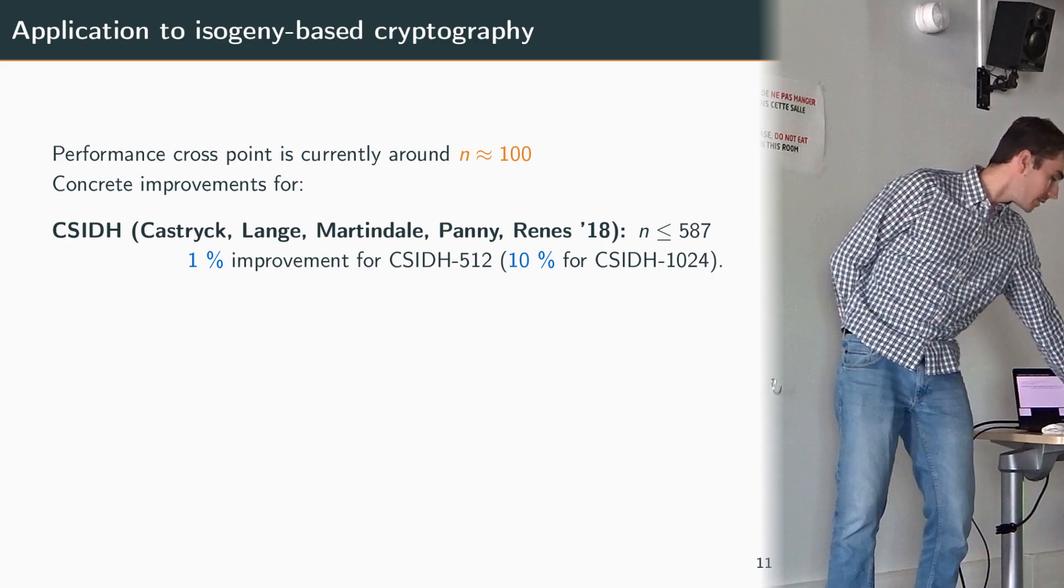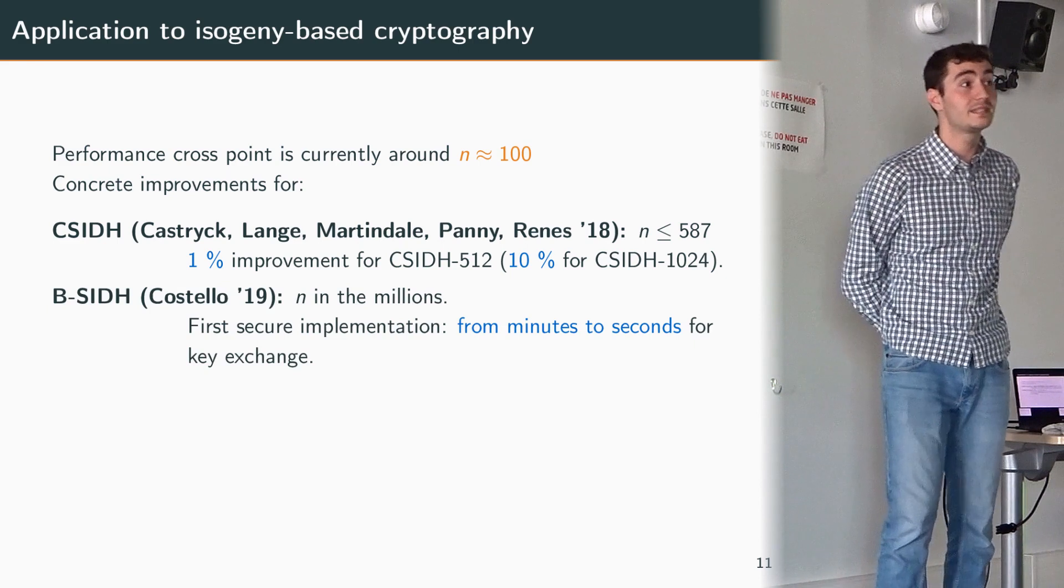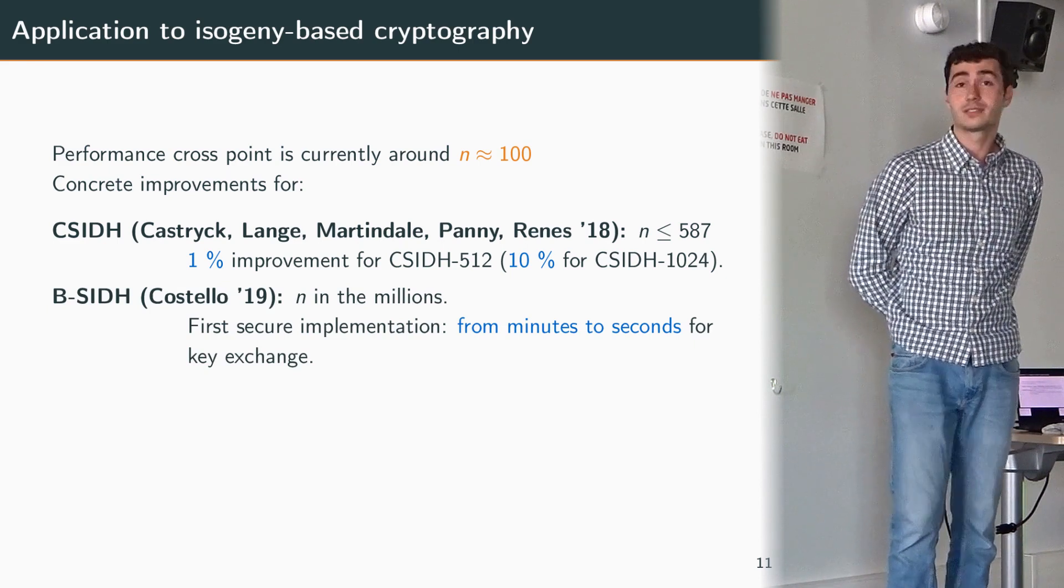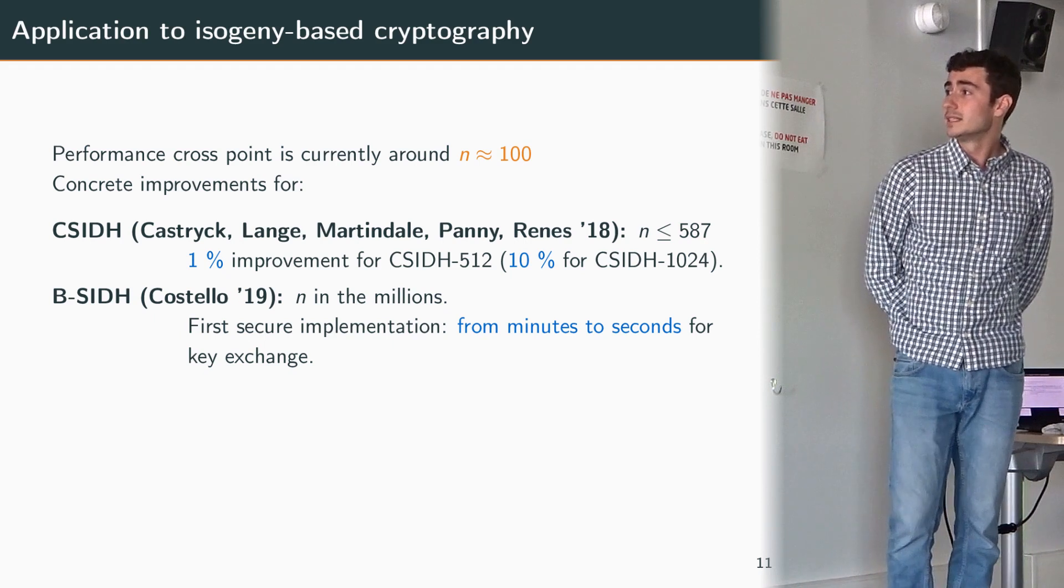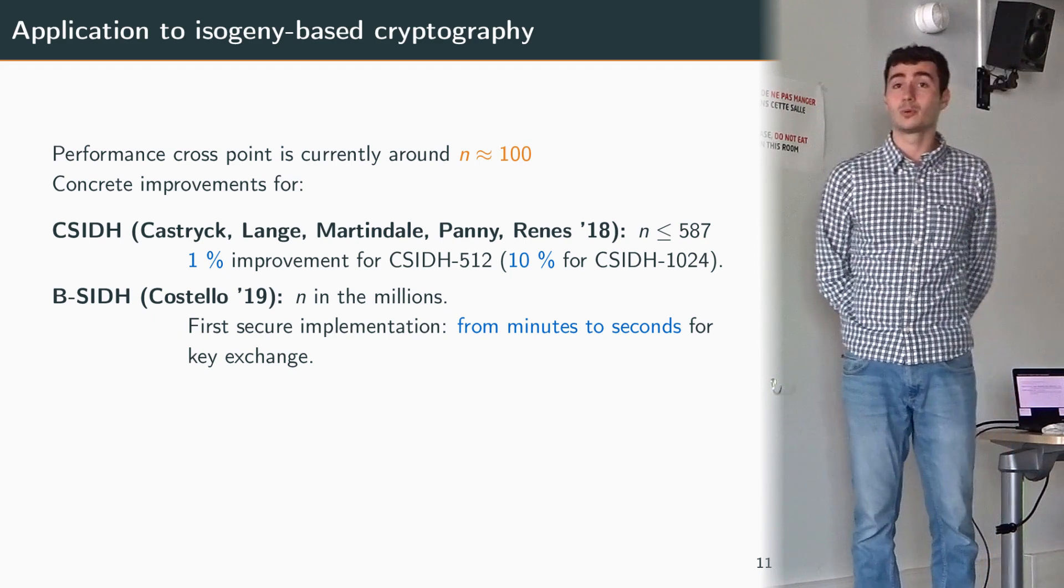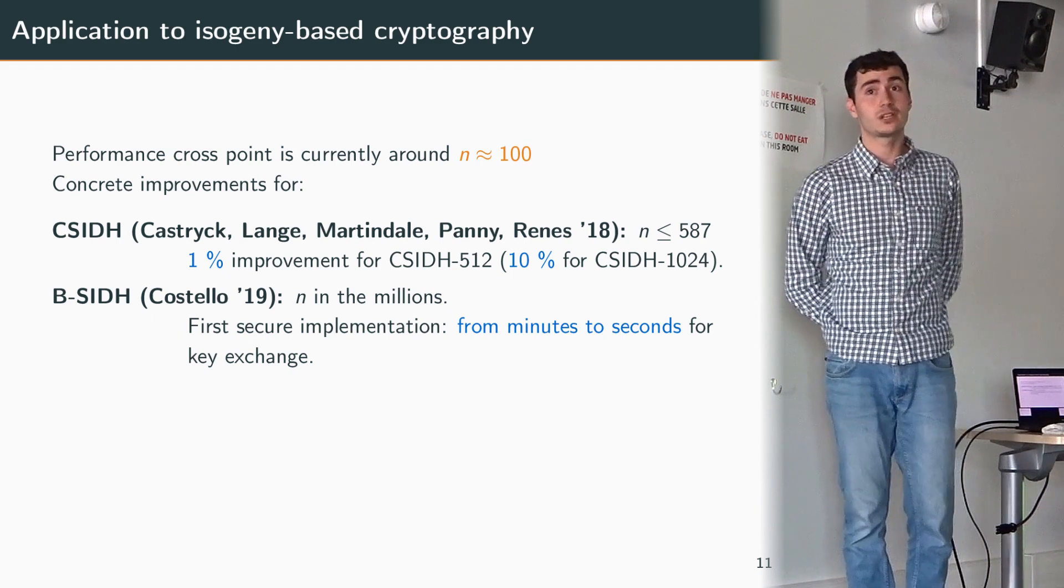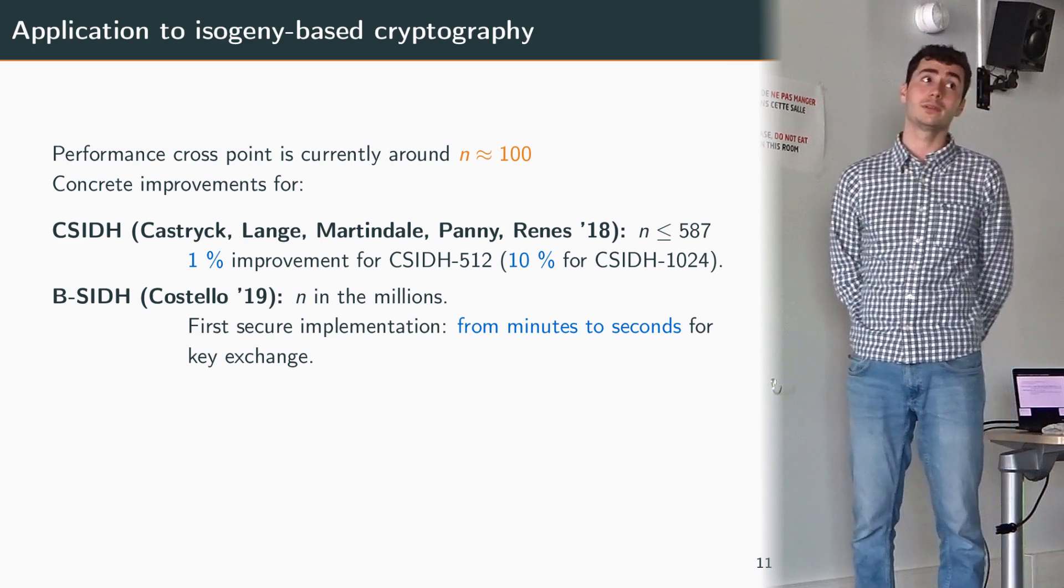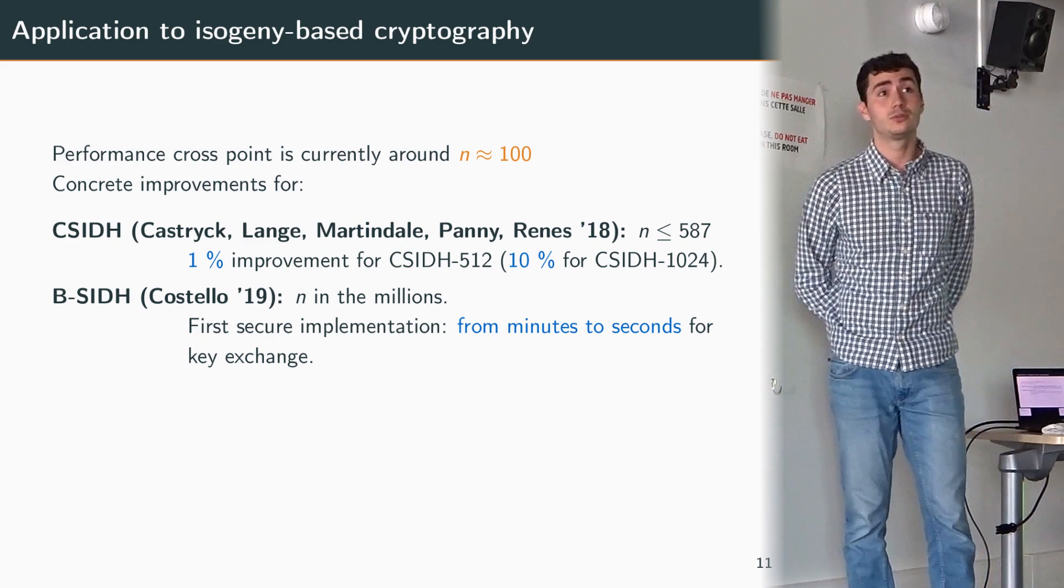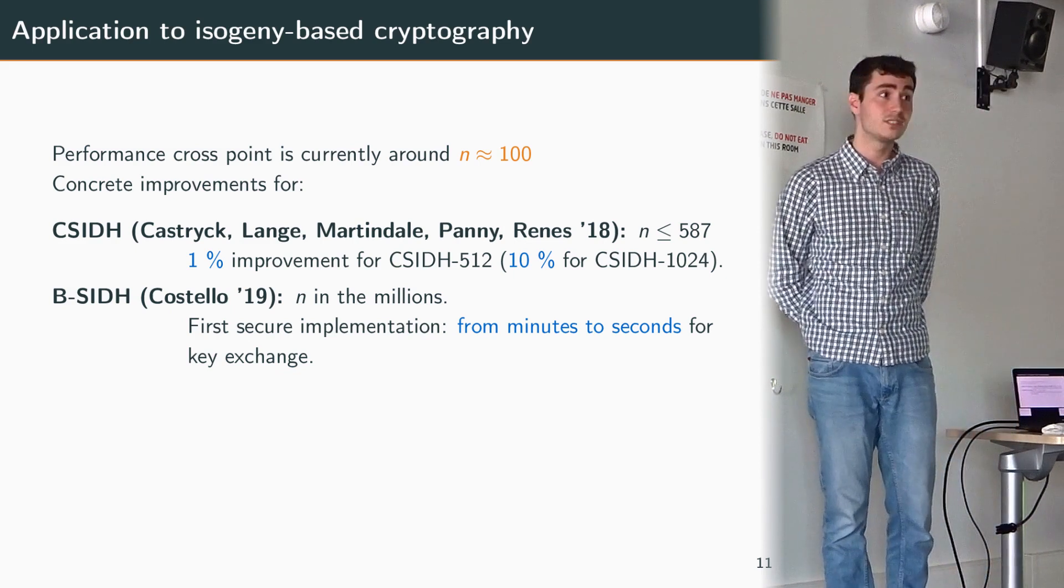A more impressive example is definitely the protocol B-SIDH of Craig Costello which can be seen as an adaptation of the SIDH protocol. For this protocol we need a computation of n going up in the millions and for this we actually propose the first secure implementation of this protocol. The new method allows to go from minutes to seconds for key exchange, so here the improvement is quite nice.